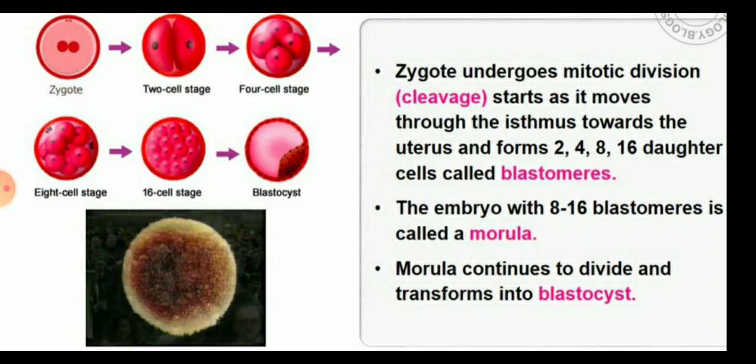The embryo with 8 to 16 blastomeres is called the morula. The morula continues to divide and transform into the blastocyst. This is the type of mitotic division occurring in the zygote.